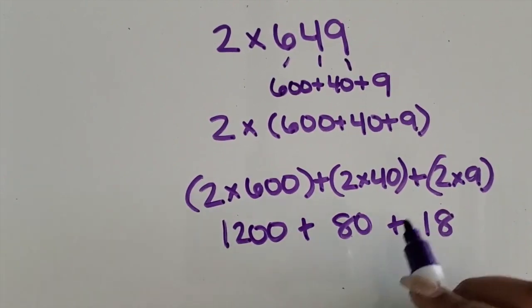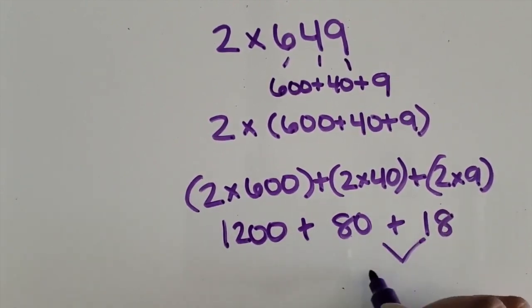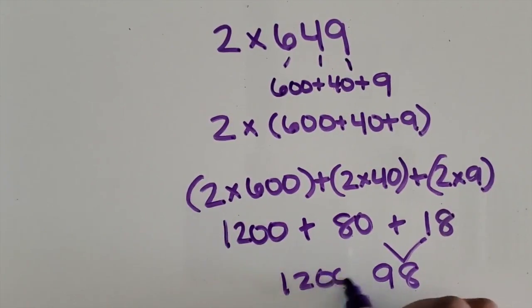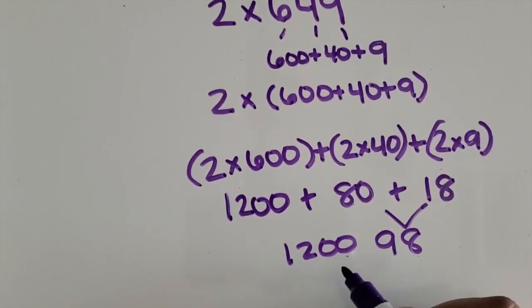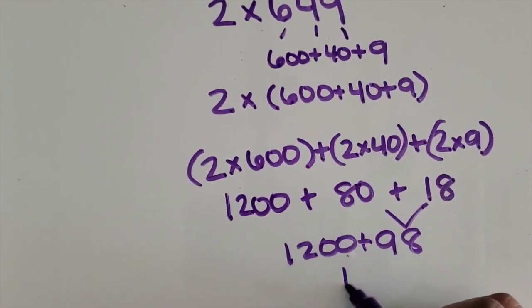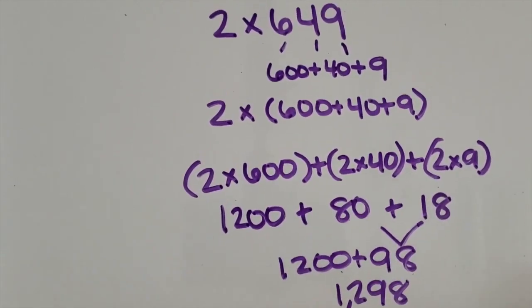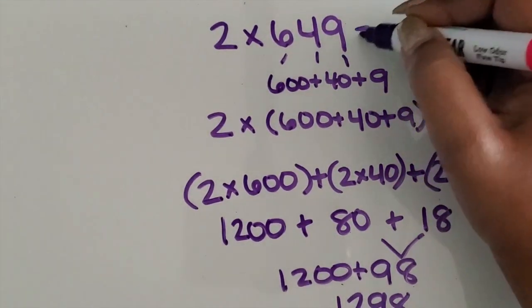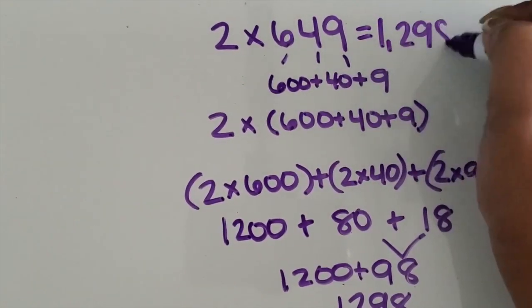Add the two-digit numbers together. You get 1,298. Keep the 1,200. 1,200 plus 98 is 1,298. The product is 1,298.